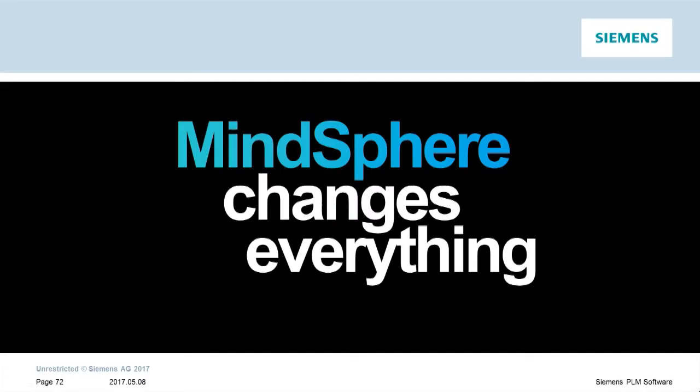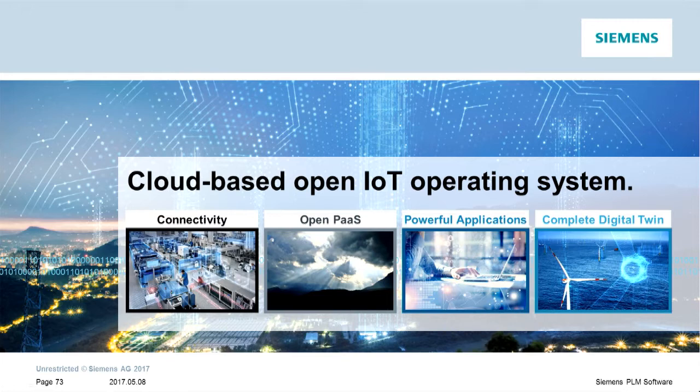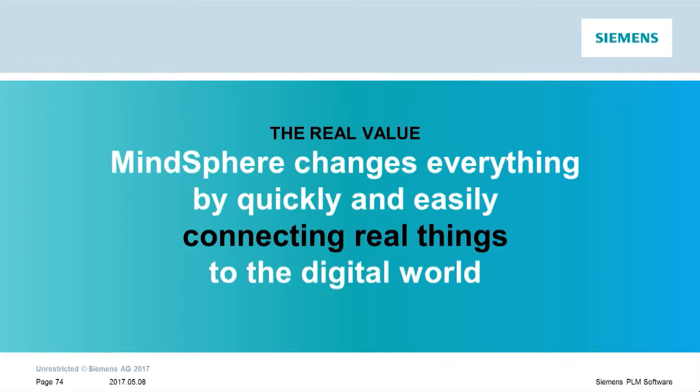Thank you, Jim. I'm going to take us through the utilization topic and talk about MindSphere. We've heard a lot about how digitalization changes everything, and what we're going to talk about next is how the Internet of Things and MindSphere changes everything. When we talk about MindSphere, we talk about it as a cloud-based open IoT operating system. Today we'll quickly go through four different topics: connectivity, open platform as a service, powerful industry applications, and the connection back to the complete digital twin.